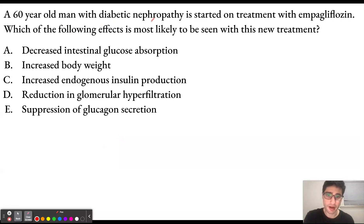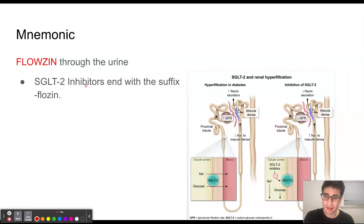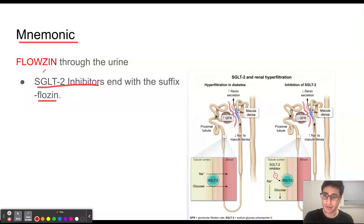A 60-year-old man with diabetic nephropathy is started on treatment with empagliflozin. Which of the following effects is most likely to be seen with this new treatment? In order to answer this question, we have to know what empagliflozin is. Empagliflozin is an SGLT2 inhibitor, and we can remember this by looking at the suffix '-flozin.' SGLT2 inhibitors end with the suffix '-flozin,' and the mnemonic to remember their function is: flozin through the urine.